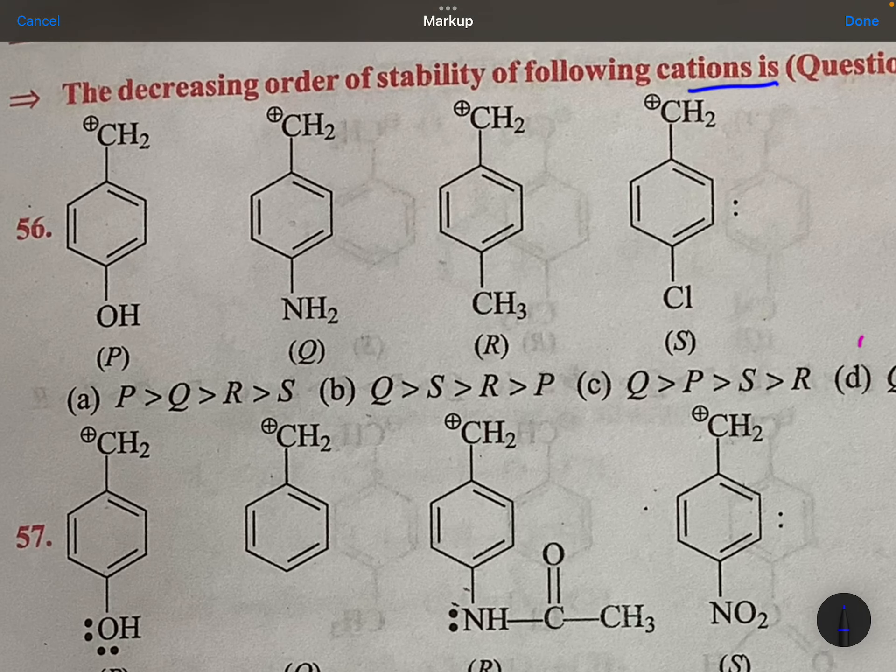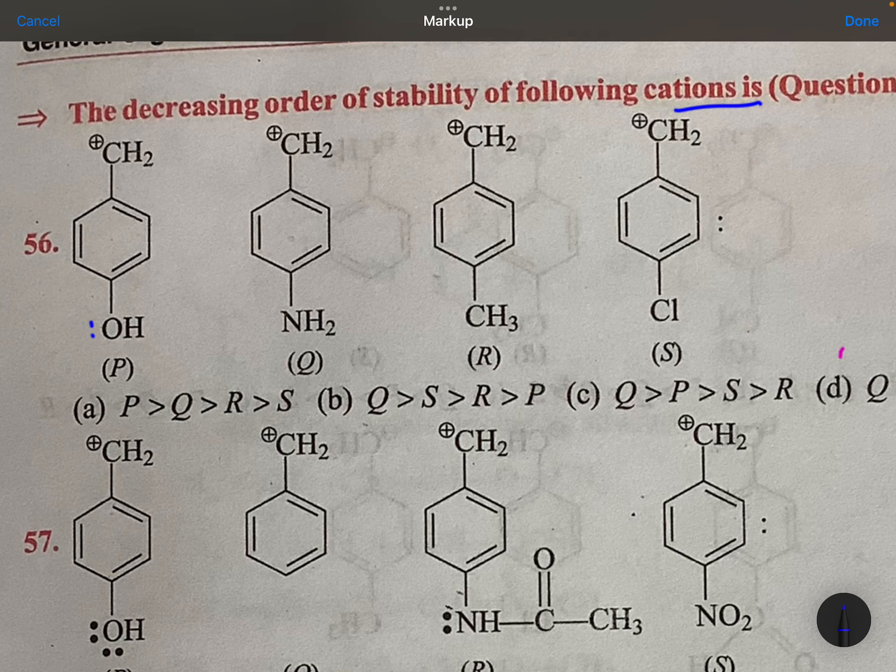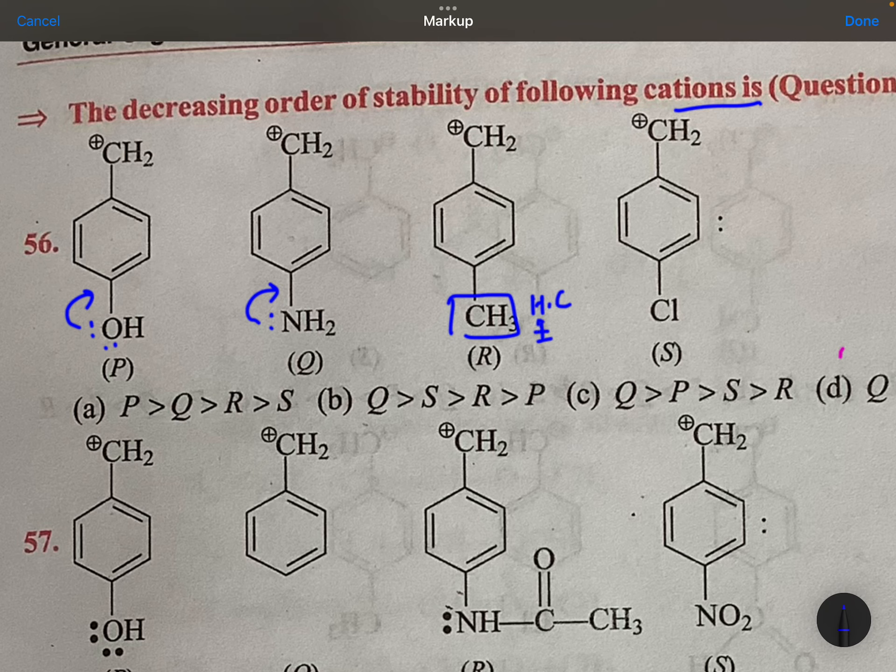See, CH2 plus is there. Here OH is there, it can give the electron pair. NH2, it can give the electron pair. CH3 only, hyperconjugation and inductive effects. Plus I. It is a type of minus I group.